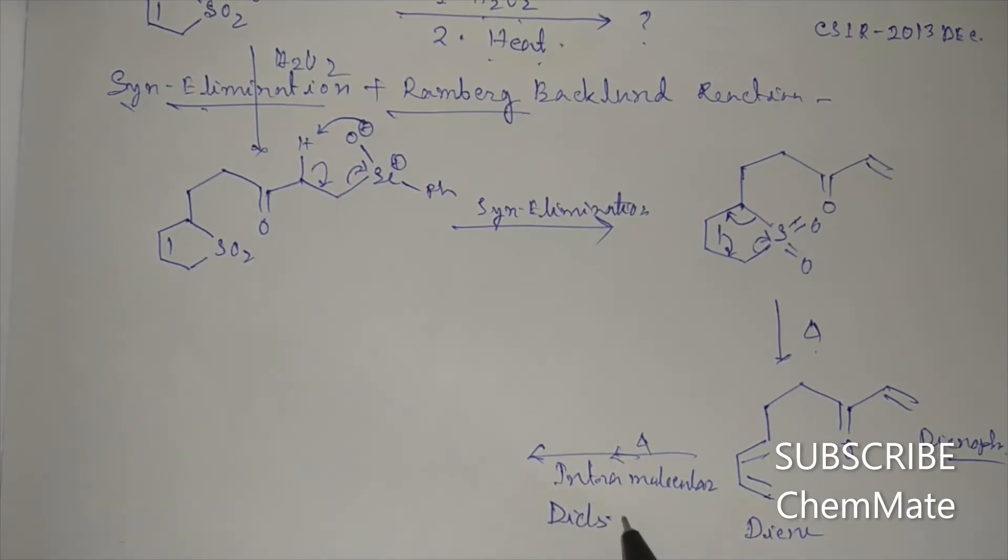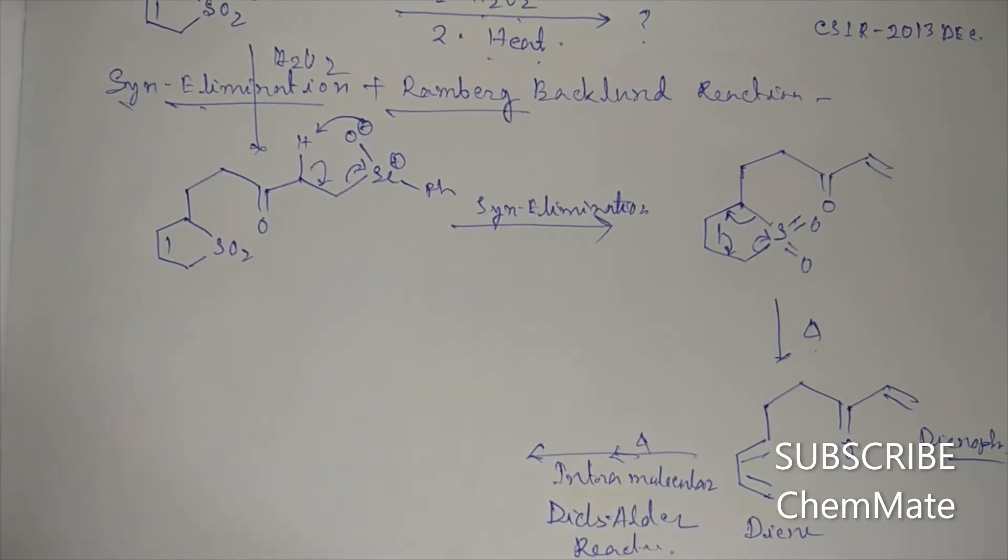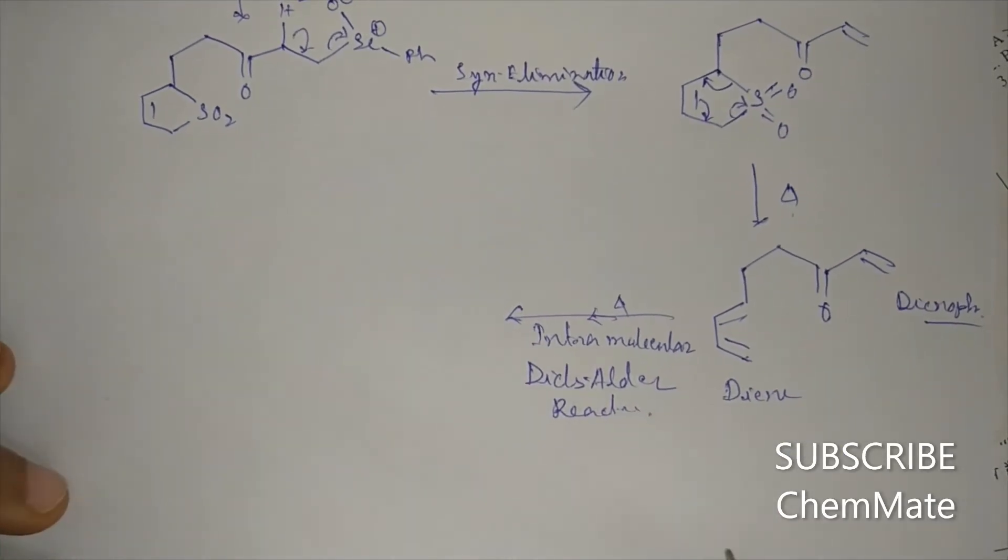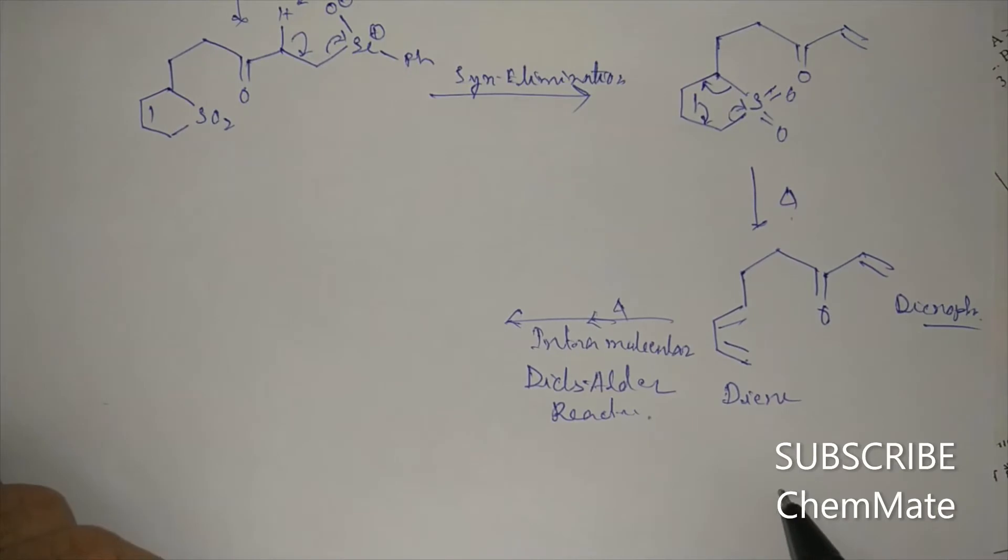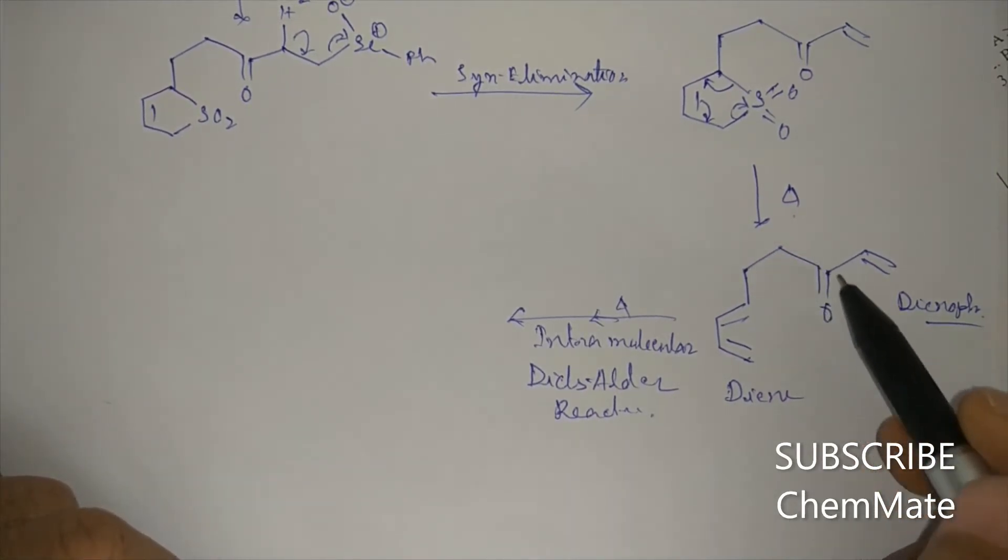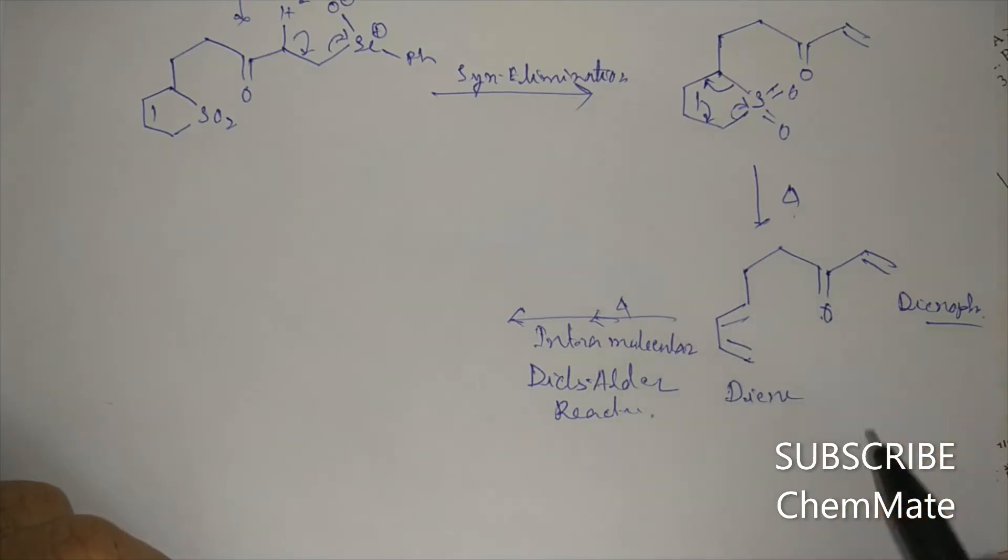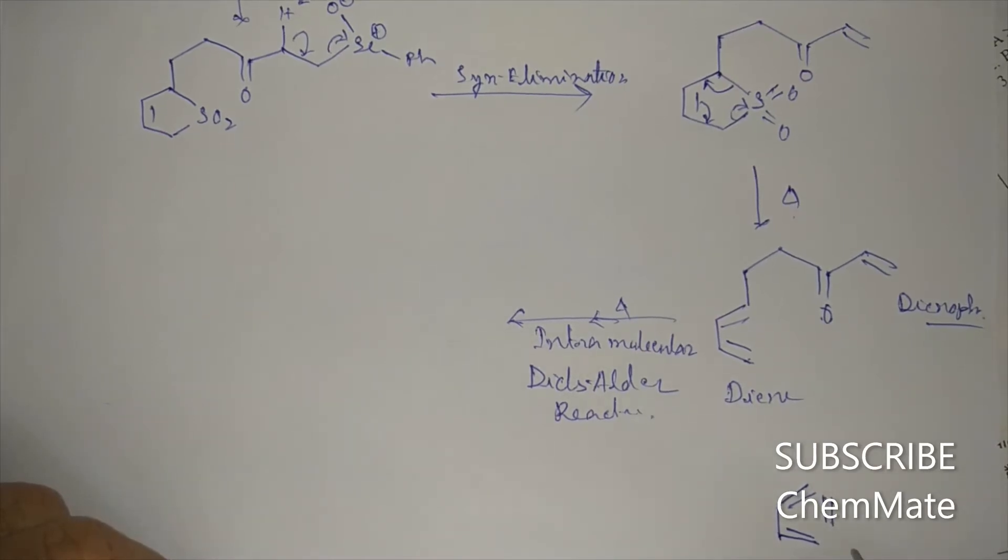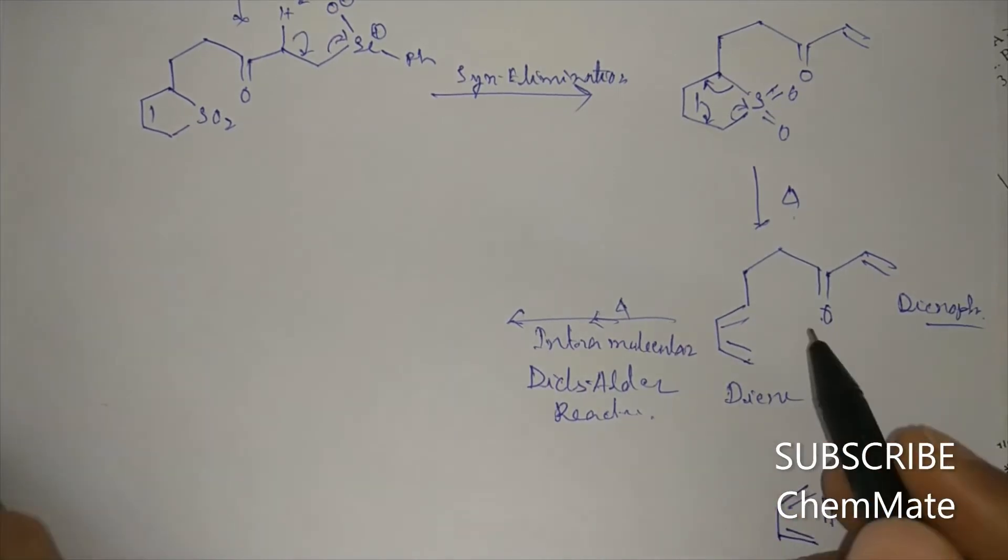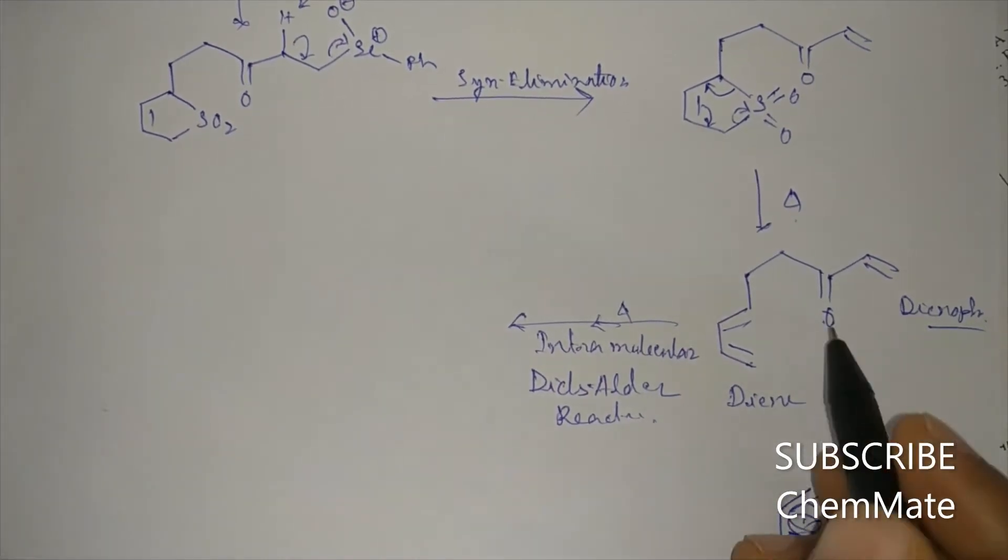Intramolecular Diels-Alder reaction. So I am drawing this in this way. Here a C double bond O group is there, so endo orientation will be preferred here. Endo orientation.